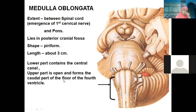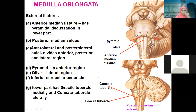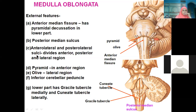Below the stria medullaris, whatever area is there, is all contributed by the posterior aspect of the medulla oblongata. Coming to the external features of the medulla oblongata: we have the anterior median fissure, and there is pyramidal decussation where pyramidal tracts are crossing over — right track to the right side. We also have the posterior median sulcus.